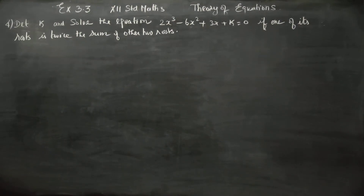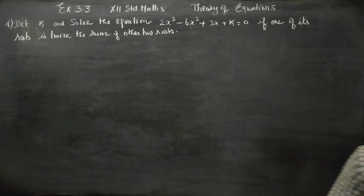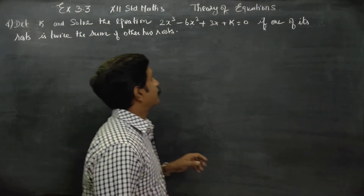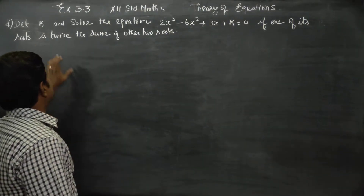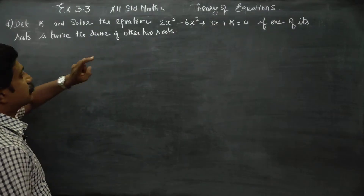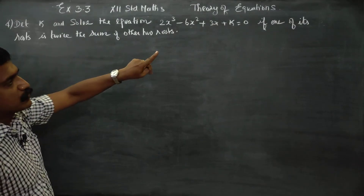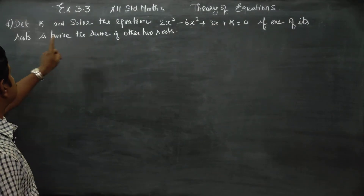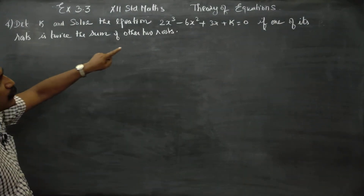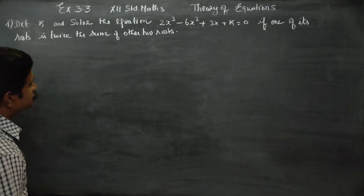Hello Class 12 standard students. In exercise number 3.3, sum number 4, we need to determine k — that is, find the value of k as well as solve the equation. The given clue is: one of its roots is twice the sum of the other two roots.